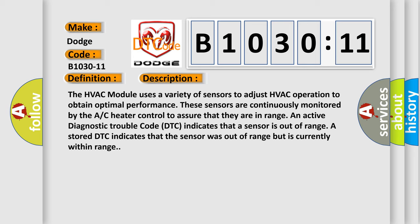An active diagnostic trouble code indicates that a sensor is out of range. A stored DTC indicates that the sensor was out of range but is currently within range.